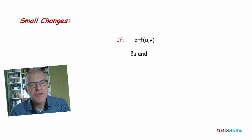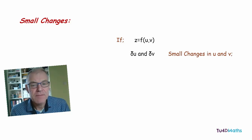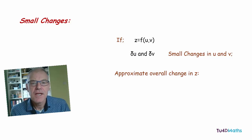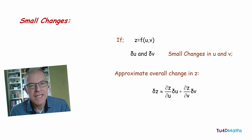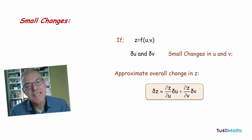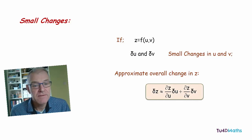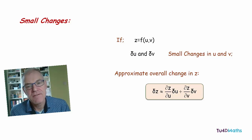Now if z is a function of u and v, and du and dv are the small changes taking place in u and v, then we can approximate the overall change in z as dz/du, the rate of change of z with respect to u, times the change in u, plus dz/dv, the rate of change of z with respect to v, times dv, the small change in v.